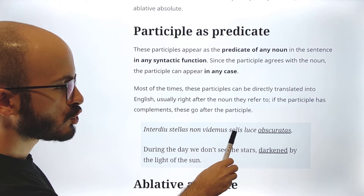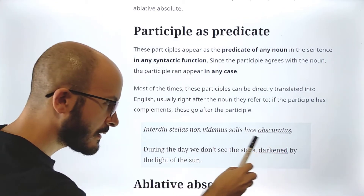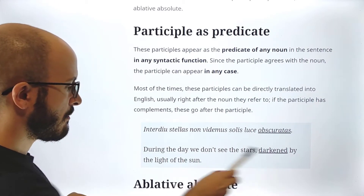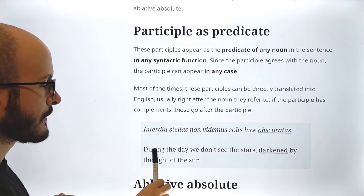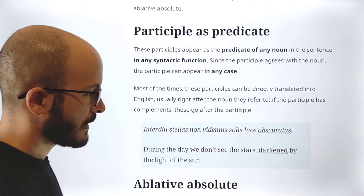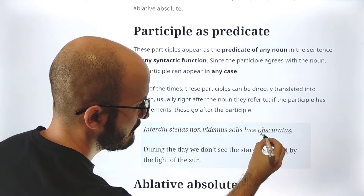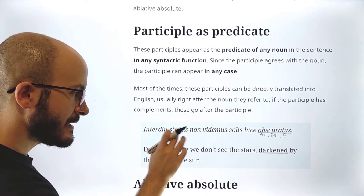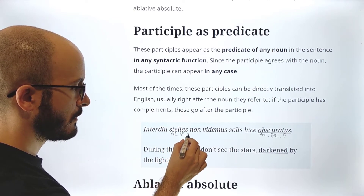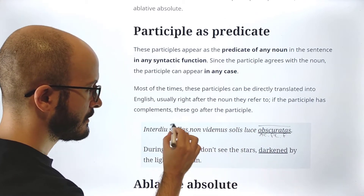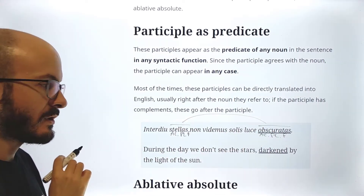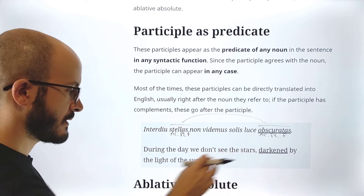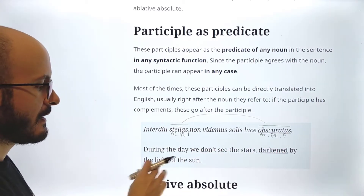For example, here we have: 'interdiu stellas non videmus solis luque obscuratas.' We can translate this as: 'During the day, we don't see the stars darkened by the light of the sun.' Here 'obscuratas' agrees with 'stellas' — it is accusative, plural, feminine — because it agrees with 'stellas,' which is accusative, plural, feminine. You see that the participle is quite far from the noun it refers to, but in English we have to translate it immediately after.